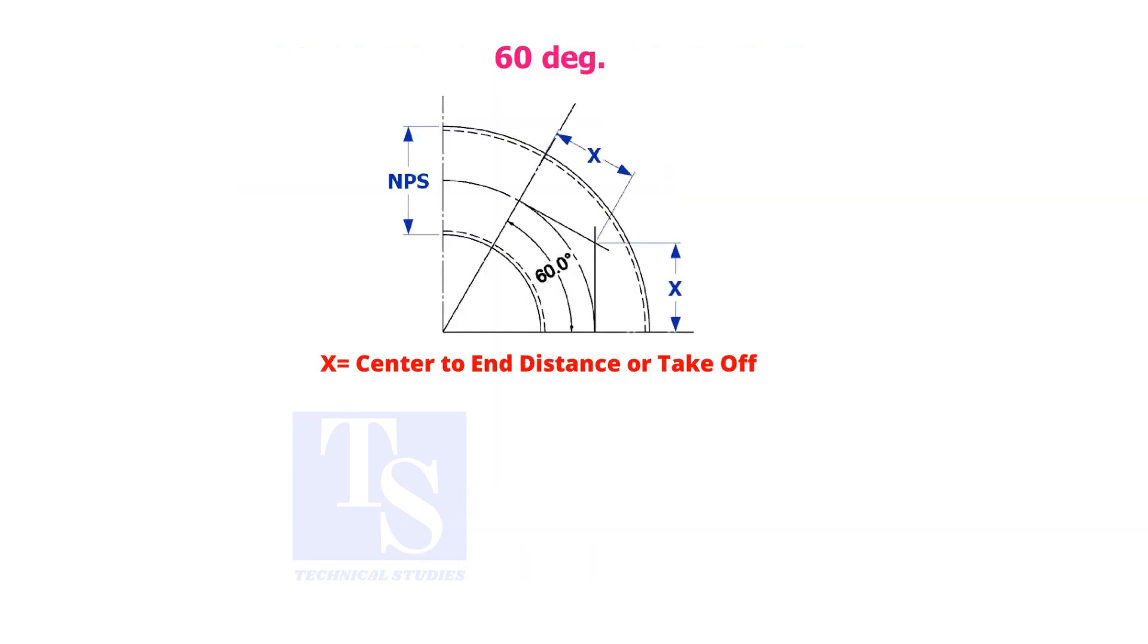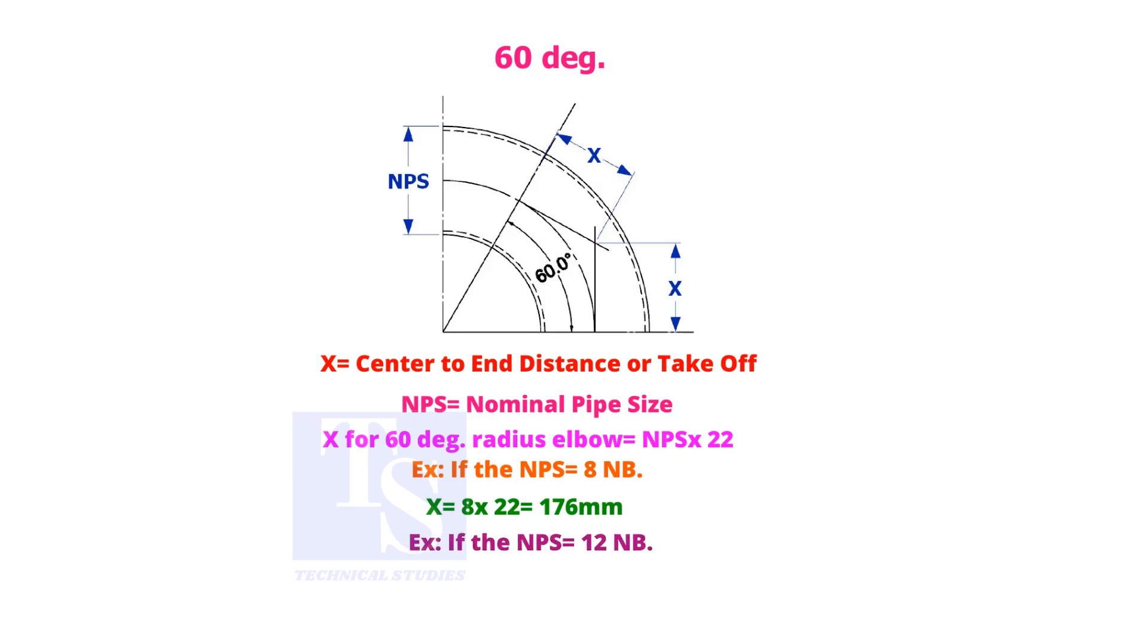To find the take-off length of a 60 degree long radius elbow, multiply the nominal pipe size by 22. Try the example exercises and compare your answer with the answer given.